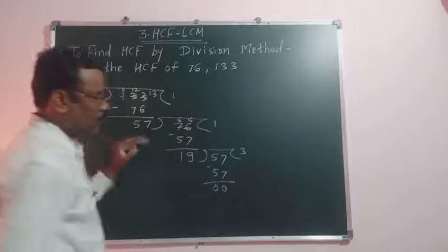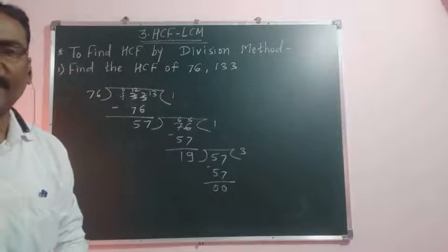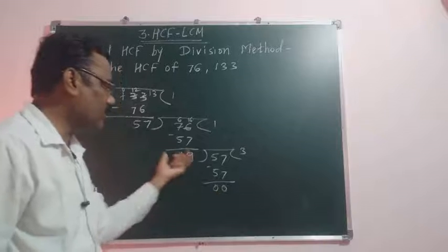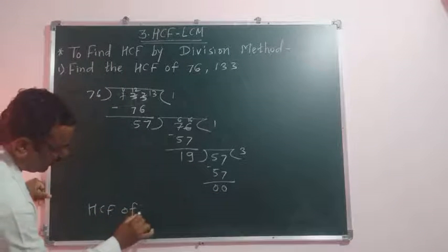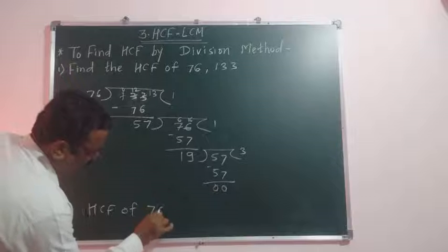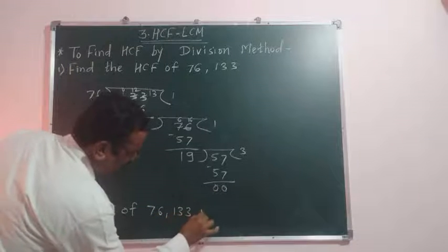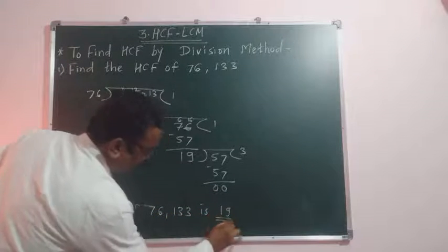So we get remainder 0. That means HCF is nothing but the divisor. Therefore HCF of 76 and 133 is 19.